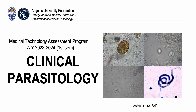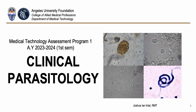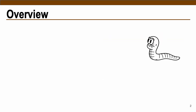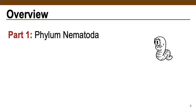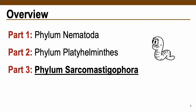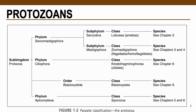Hello everyone and welcome to the MTAP for the first semester in clinical parasitology. In this video, we will be discussing the vast world of the protozoans. The sub-kingdom Protozoa is divided into three clinically important phyla: phylum Sarcomastigophora, phylum Ciliophora, and phylum Apicomplexa. In this video, we will be discussing the first class under phylum Sarcomastigophora, which is the class Lobosea, or what we call the amoebas.